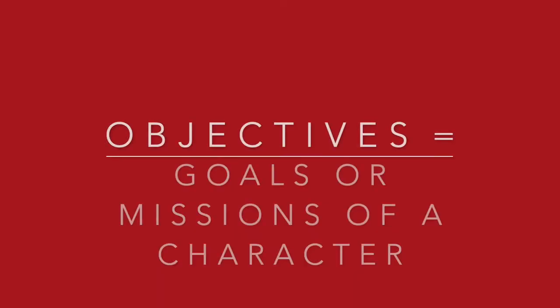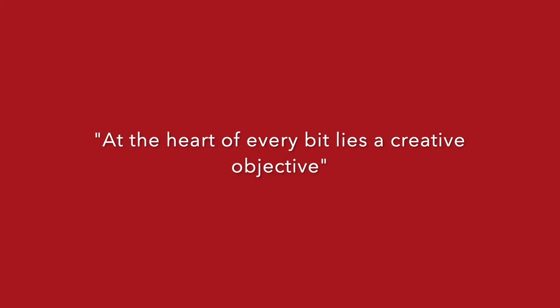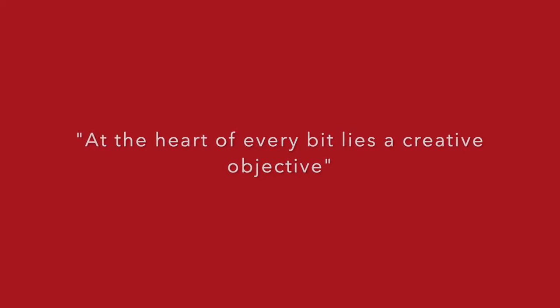To explain what I meant by tactics, I'll talk about objectives. These are your character's goals and desires, and the backbone to how action and emotions can be true on stage is understanding what your character wants and how they're going to get it. Stanislavski said that at the heart of every bit is an objective and vice versa — so each bit will be formed around a given objective.